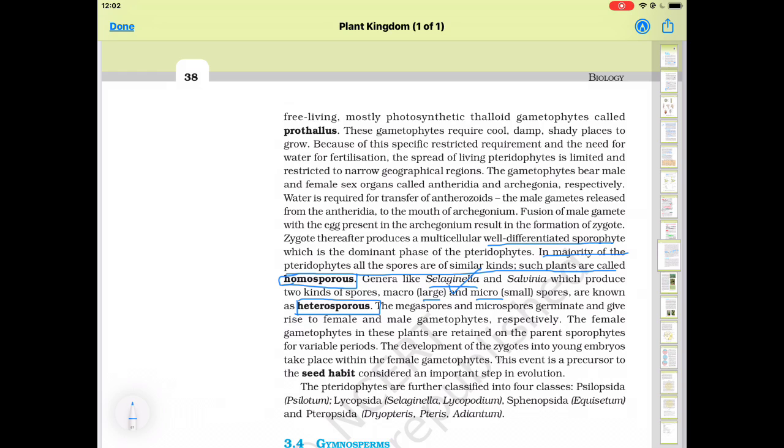The female gametophyte in these plants are retained on the parent sporophyte for variable periods. The female gametophyte remain attached to the sporophyte for some time. The development of the zygote into young embryo takes place within the female gametophyte. The zygote develops into embryo and all these structures are present inside the female gametophyte. This event is precursor to the seed habit considered as an important step in evolution.